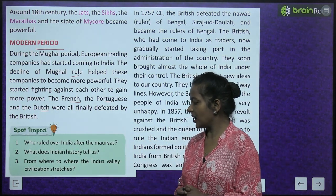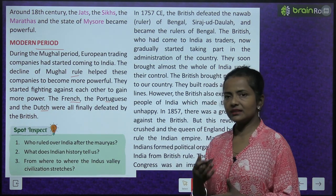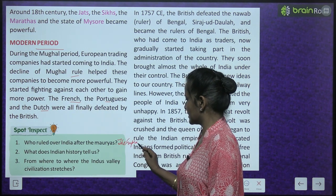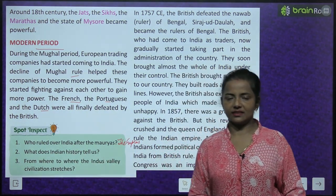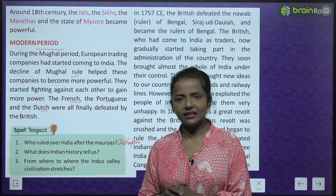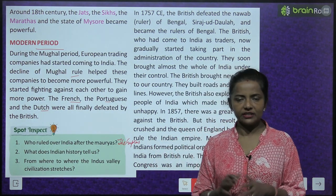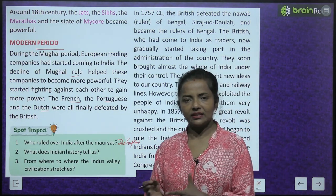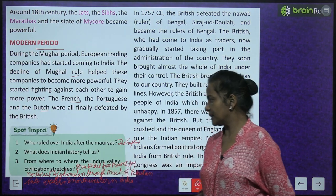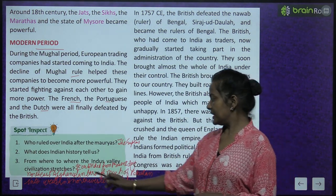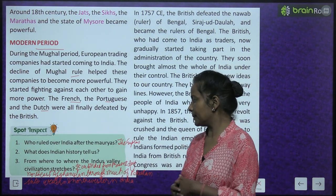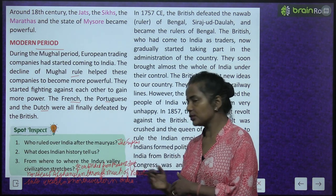Spot inspect: Who ruled over India after the Mauryas? The Guptas. What does Indian history tell us? Indian history is very rich and diverse, and it tells us about the rise and fall of different dynasties like the Mauryas, the Guptas, the Mughals, and the British. From where to where does the Indus Valley Civilization stretch? It extends from present-day North East Afghanistan through much of Pakistan into Western and North Western India.